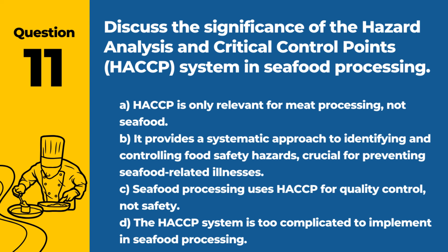Question 11. Discuss the significance of the Hazard Analysis and Critical Control Points (HACCP) system in seafood processing. a. HACCP is only relevant for meat processing, not seafood. b. It provides a systematic approach to identifying and controlling food safety hazards, crucial for preventing seafood-related illnesses. c. Seafood processing uses HACCP for quality control, not safety. d. The HACCP system is too complicated to implement in seafood processing. Answer: b. It provides a systematic approach to identifying and controlling food safety hazards, crucial for preventing seafood-related illnesses. HACCP is fundamental in ensuring the safety of seafood products.